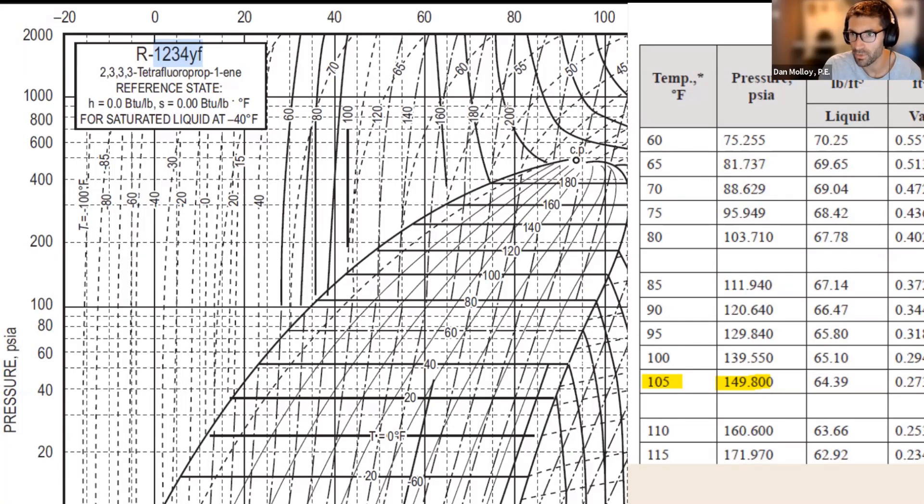To have however much superheat you have. So I'm going to take that all the way to the 60 degree line. So that's the whole story with superheat. You just want to stay horizontal until you hit the target temperature going from 40 to 60. That's it.